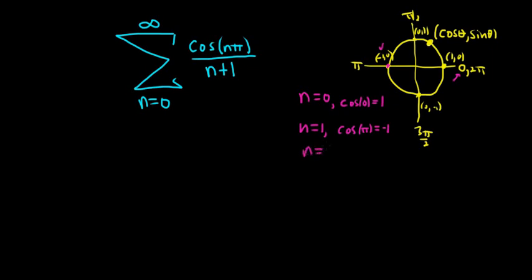When n is equal to 2, we get cosine of 2 pi. Well, 2 pi puts us back here, so it looks like we get 1. When n is 3, we get cosine of 3 pi. Well, 3 pi means we go around one time, and then we go around half the time, right? So we end up here again, this is 3 pi. So this is going to be negative 1.